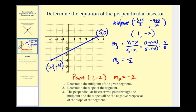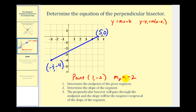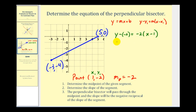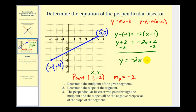Now we'll determine the equation of this line. To find the equation given the slope and a point, we can use the point-slope form. Our slope m is negative two, x₁ is positive one, and y₁ is negative two. So we have y minus negative two equals negative two times x minus one. Solving for y: y plus two equals negative two x plus two. Subtracting two from both sides gives y equals negative two x. So we have a slope of negative two and a y-intercept of zero.